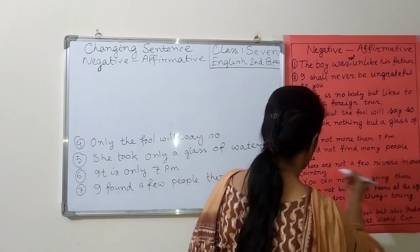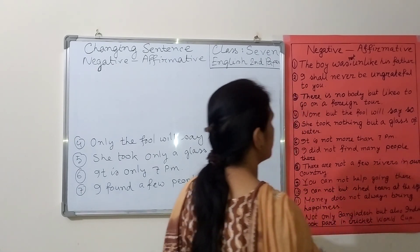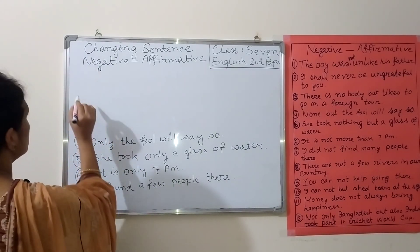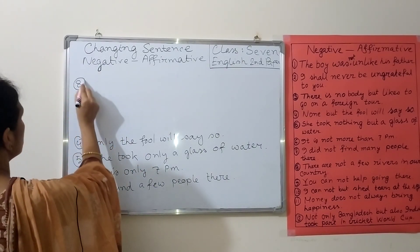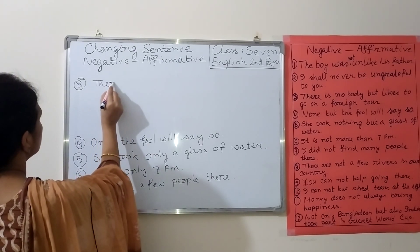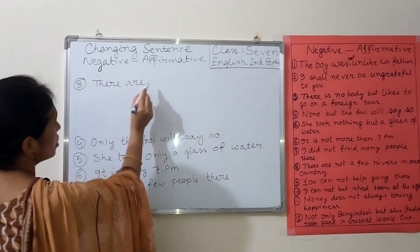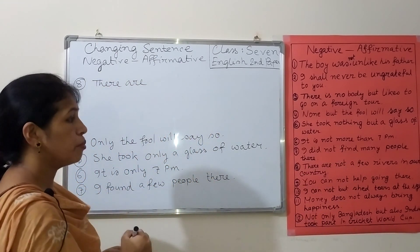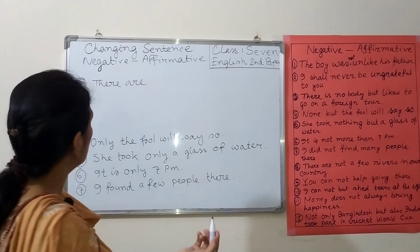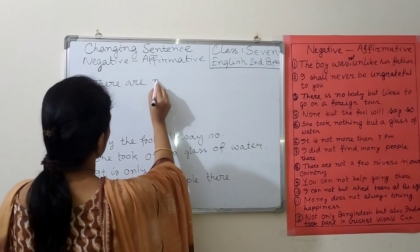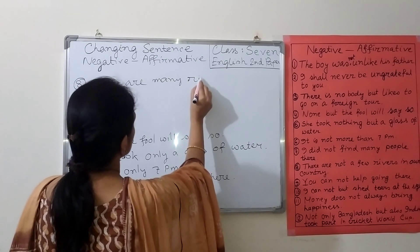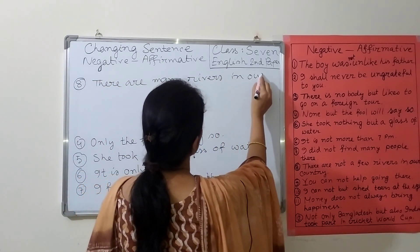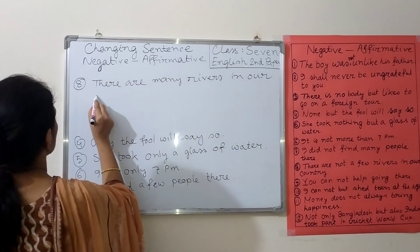Number eight: 'There are not a few rivers in our country.' To make it affirmative, we see 'not a few' and we will use 'many' instead. The affirmative sentence is: 'There are many rivers in our country.'